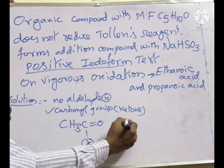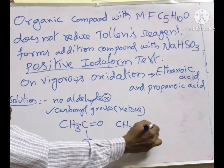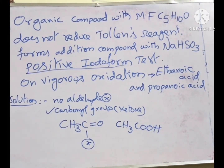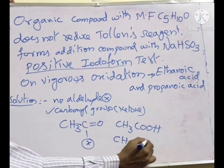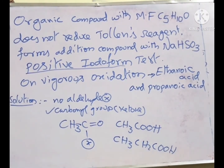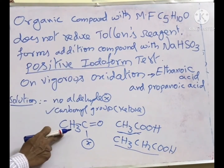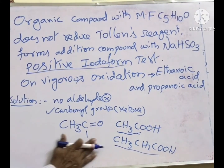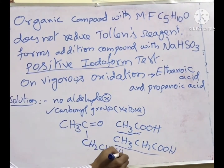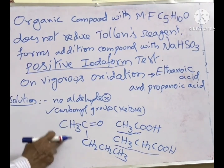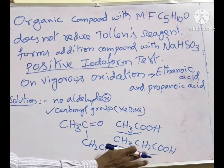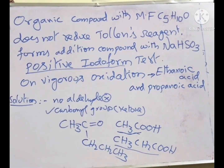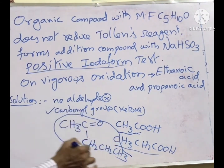How do I get ethanoic acid? CH3COOH — two carbons, that is acetic acid. Propanoic acid is three carbons: CH3CH2COOH. That means one side I can have two carbons containing, another side three carbons. Total I have five. That's why it is a ketone. One side is methyl — together with COO you get ethanoic acid. The other alkyl group is a propyl group giving propanoic acid.